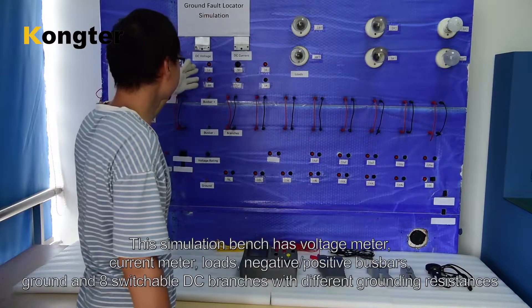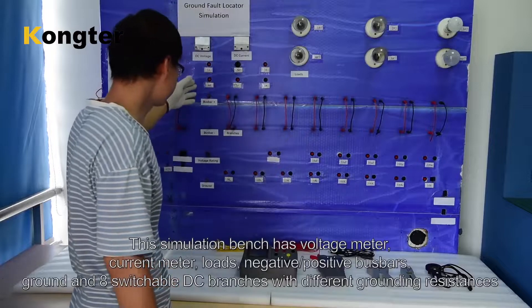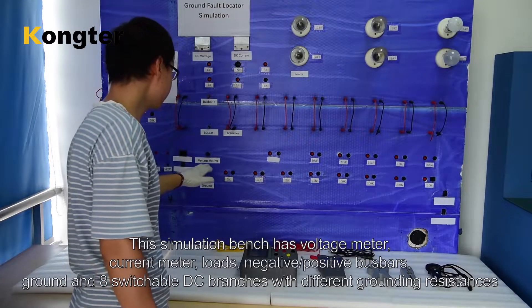This simulation bench has voltage meter, current meter, loads, negative, positive bus bars, ground and 8 switchable DC branches with different grounding resistances.